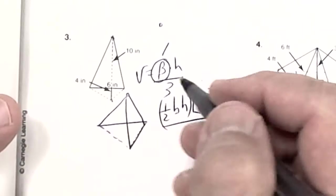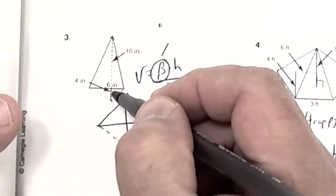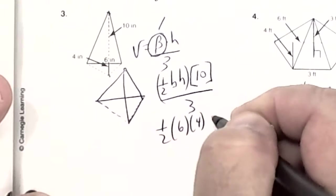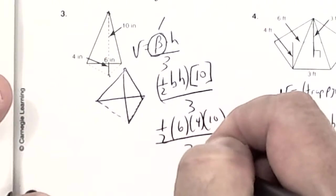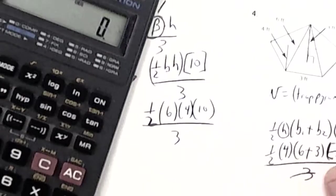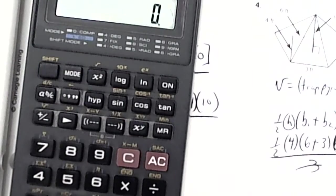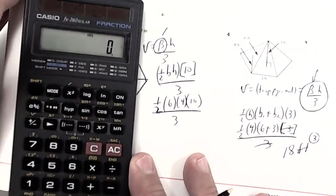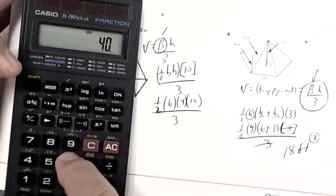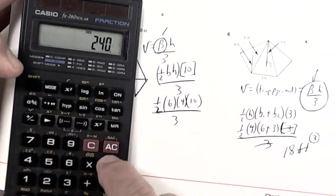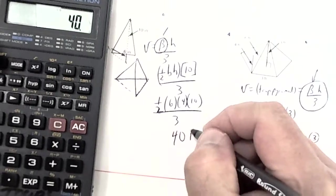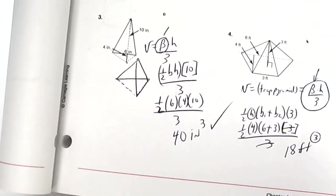The height of the pyramid is 10. The base of the triangle is 6 and the height of the triangle is 4. So it's one-half of 6 × 4 × 10, divided by 3. On your calculator: 4 × 10 = 40, then × 6, press equals, divide by 2, divide by 3 — you should get 40 cubic inches.